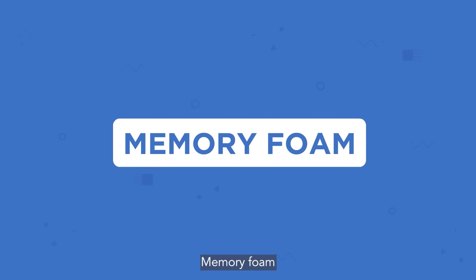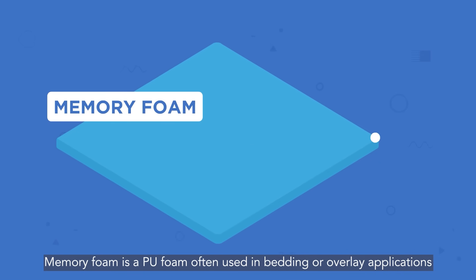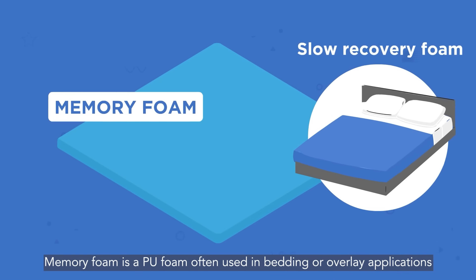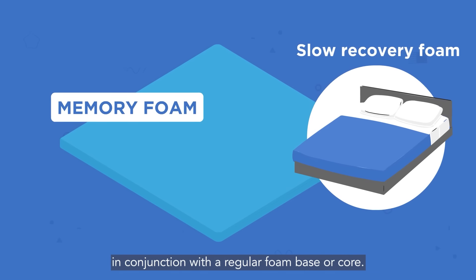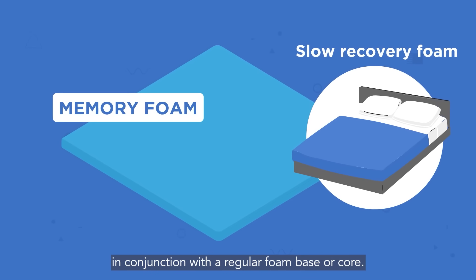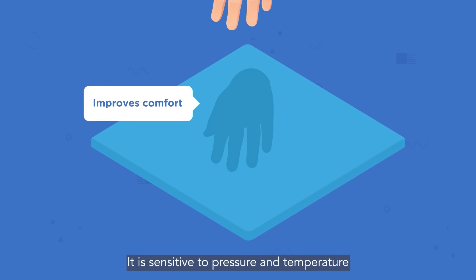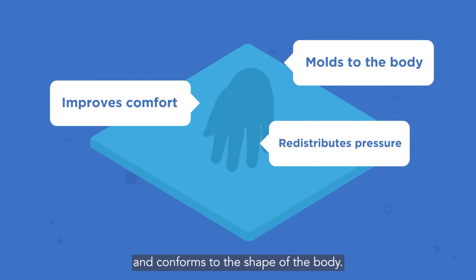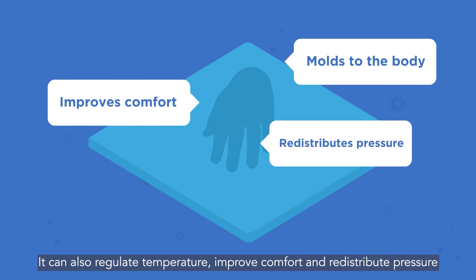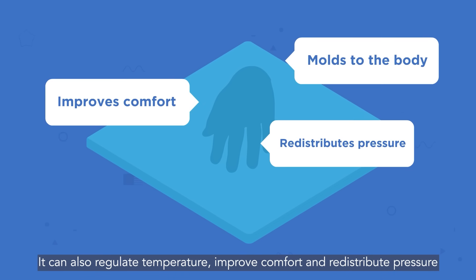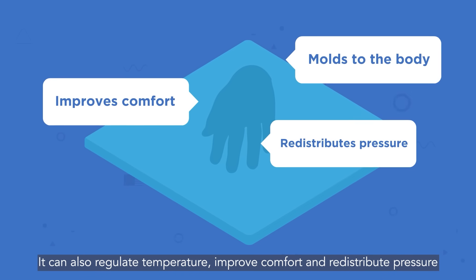Memory foam is a PU foam often used in bedding or overlay applications, in conjunction with a regular foam base or core. It is sensitive to pressure and temperature and conforms to the shape of the body. It can also regulate temperature, improve comfort, and redistribute pressure.